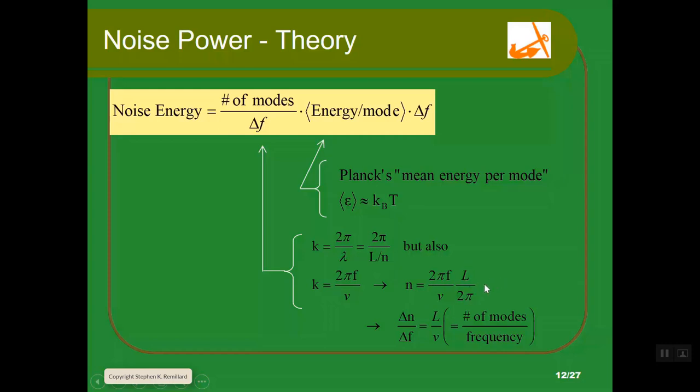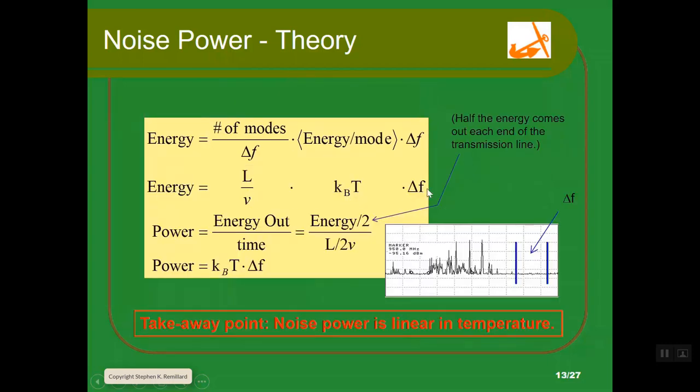You can cancel the 2 pi's. But what we can do is differentiate it to find the number of modes per unit frequency. So dn by df gives you the number of modes per frequency. When you go dn by df, you're left with L over V. That's your number of modes per frequency. So you have noise energy is L over V times kT times delta F. That's the noise energy contained within a frequency range delta F. You pick a frequency range and that's the noise energy in it.